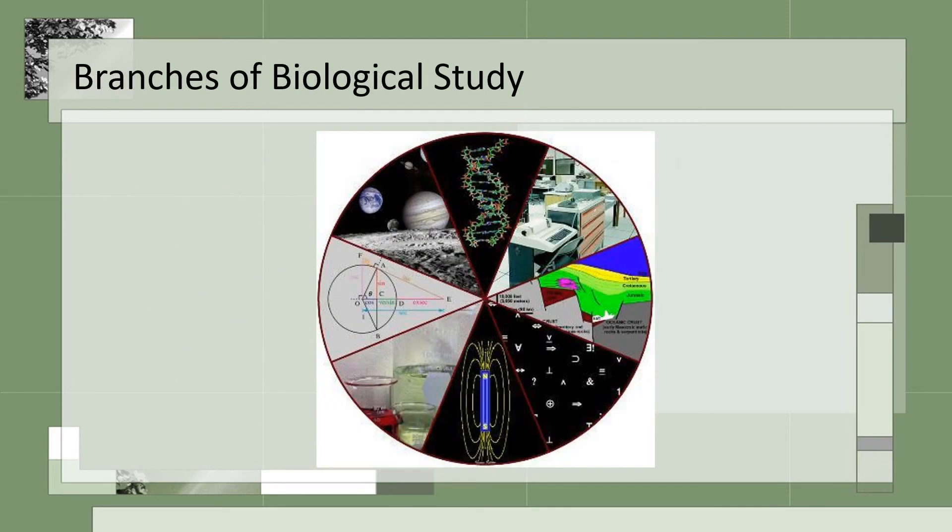There are so many branches of biology. Molecular biologists study genetics and other molecular-level processes. Microbiologists study structure and functions of organisms requiring a microscope. Paleontology, neurobiology, biotechnologists, environmentalists, and physiologists are all different types of biologists which specialize in a sub-discipline of biology.